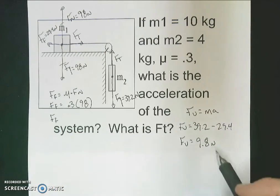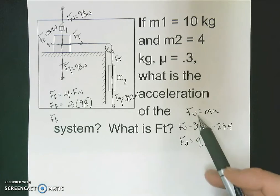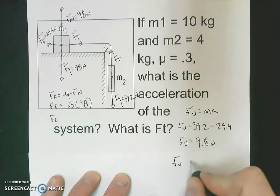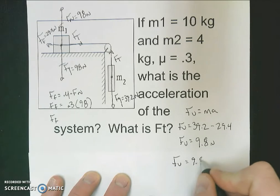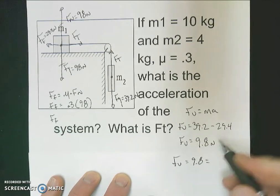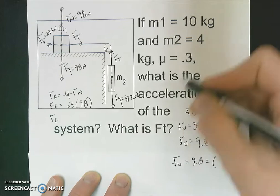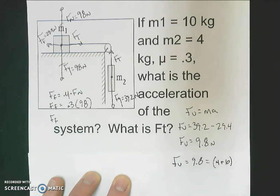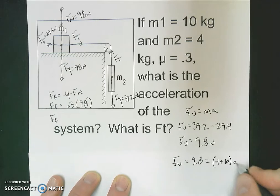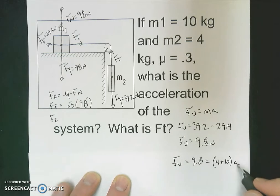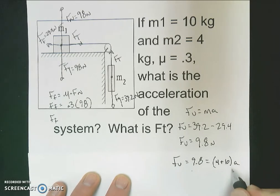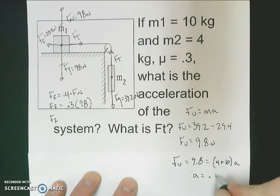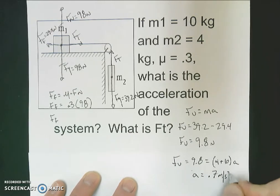Now that I know that force, I can apply F = ma for the system. Our unbalanced force is 9.8 newtons. Our mass is going to be both masses — the 4-kilogram mass plus the 10-kilogram mass — because it's the mass of the system, times acceleration. So this becomes 9.8 = 14a. Solving for our acceleration, we get 0.7 meters per second squared.